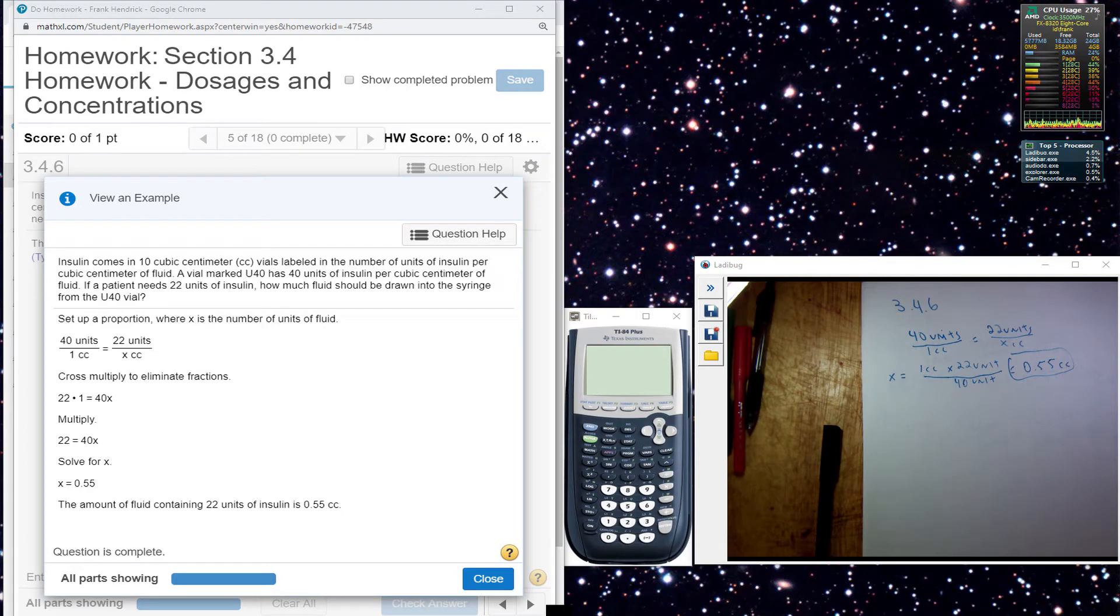This particular problem, 3.4.6. Insulin comes in 10 cubic centimeter cc vials labeled with the number of units of insulin they contain per cubic centimeter of fluid.